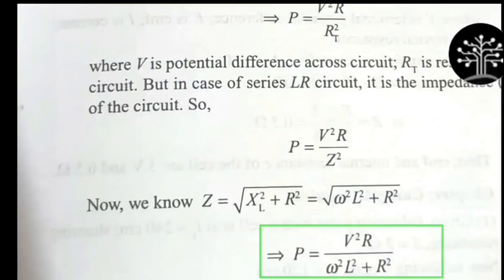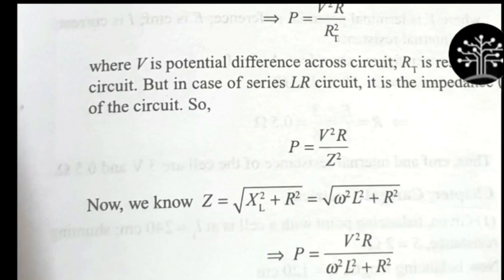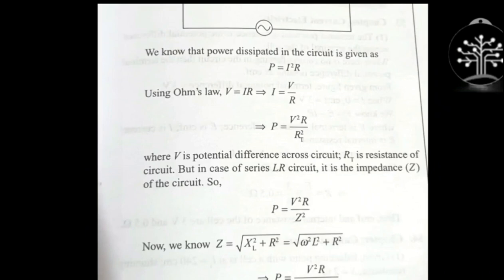Let's check the answer. You will know the formula P equals V squared R by Z squared. There are two to three formula forms available, but the final answer using our trick is correct: P equals V squared R by (angular frequency squared into inductance squared plus resistance squared). That is the correct answer. I'll show you the verification as well.